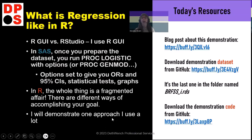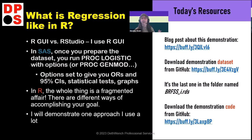So we're learning about R for logistic regression. I expect a mix of people here with different backgrounds, so I want to make sure those not very familiar with R understand what I'm talking about. R has two interfaces: one is called RGUI and the other is called RStudio. If you make code in RGUI, it runs in RStudio and vice versa — they're not different programs. What's different is the interface you're using.